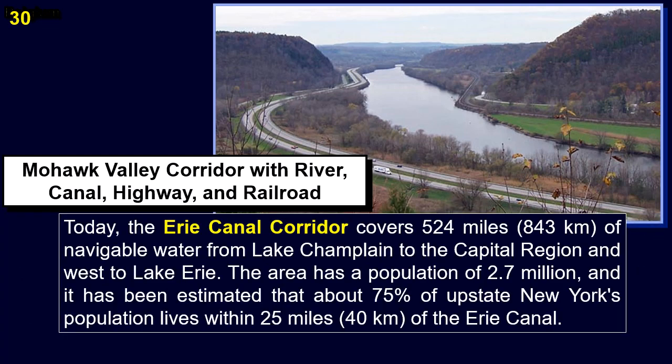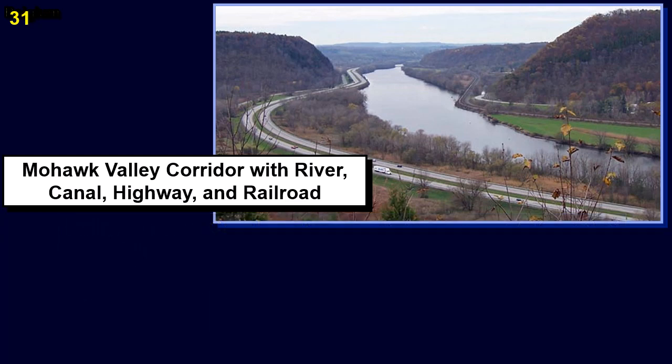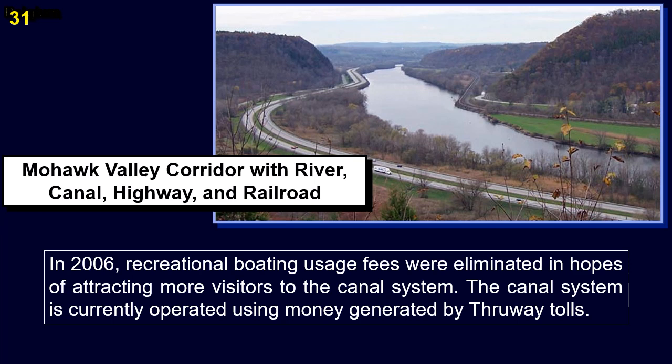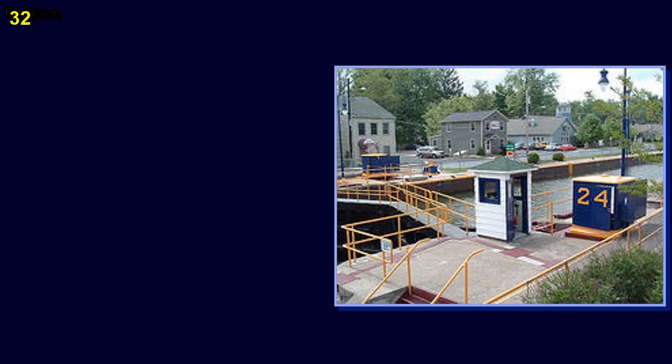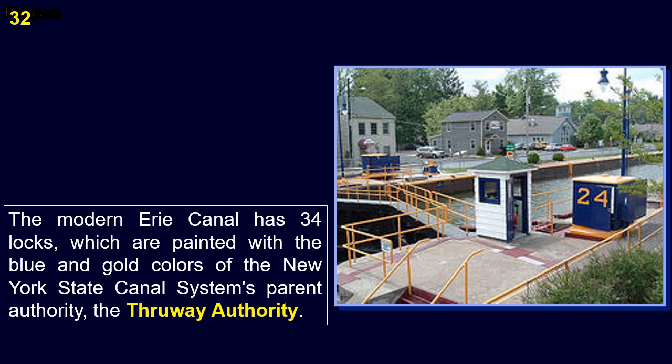Today the Erie Canal Corridor covers 524 miles of navigable water from Lake Champlain to the capital region and west to Lake Erie. The area has a population of 2.7 million, and about 75% of upstate New York's population lives within 25 miles of the Erie Canal. In 2006, recreational boating usage fees were eliminated to attract more visitors. The canal system is currently operated using money generated by Thruway tolls. The modern Erie Canal has 34 locks, painted with the blue and gold colors of the New York State Canal system's parent authority, the Thruway Authority.